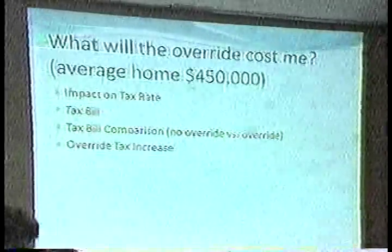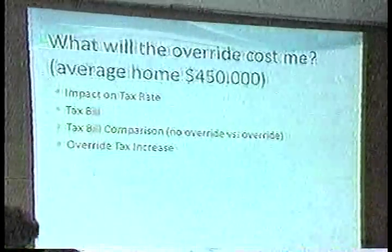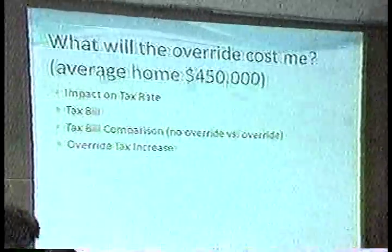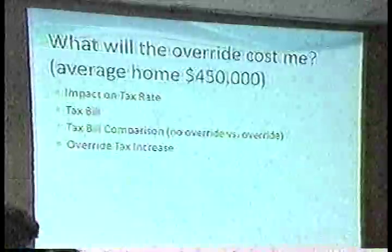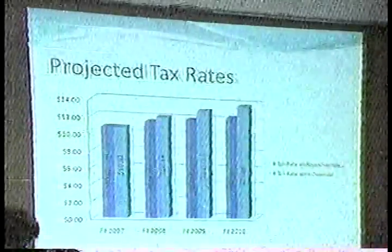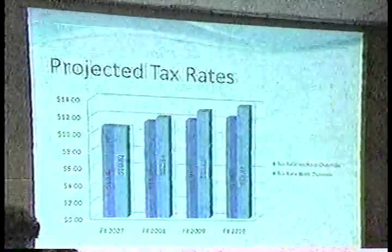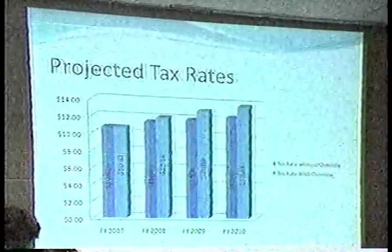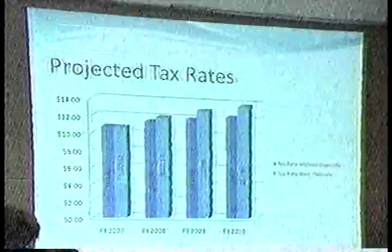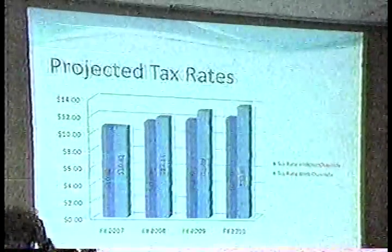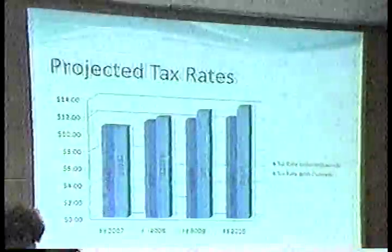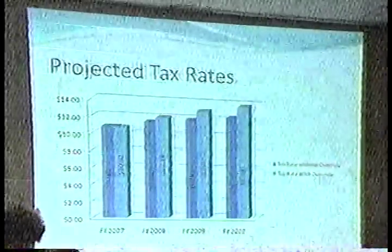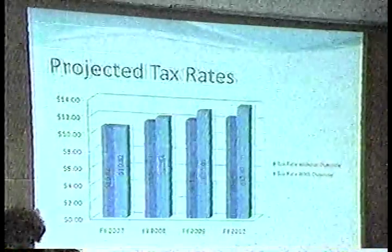We're looking at a home valued at $450,000. We want to look at the impact on the tax rate, the tax bill, the tax bill comparison, and the override tax increase. We'll look at the projected tax rates. Our current FY 2007 tax rate is $10.82. The tax rate is not representative of your tax bill directly.